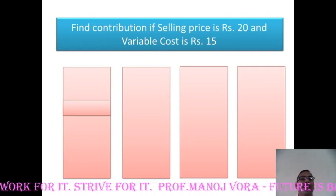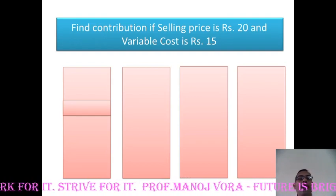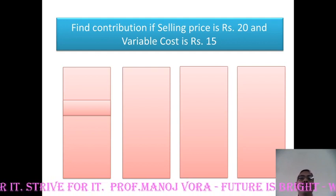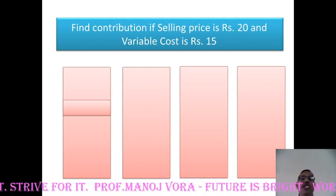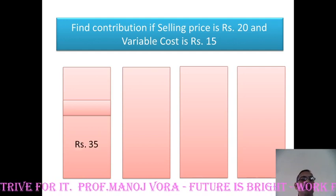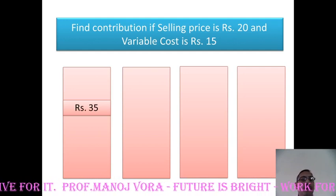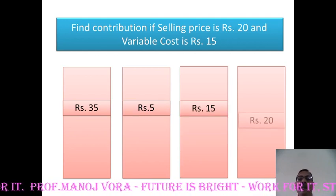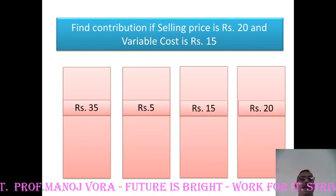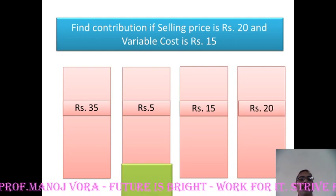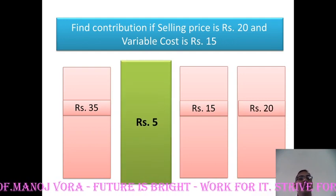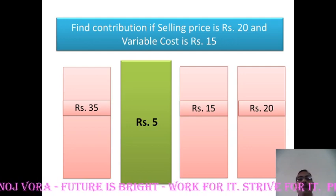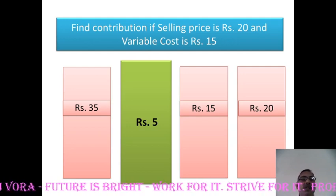Here is your next question: find contribution if the selling price given is rupees 20 per unit and variable cost is rupees 15 per unit. Your options: rupees 35, rupees 5, rupees 15, and rupees 20. Your right answer is rupees 5. Contribution is the difference between selling price and variable cost. Therefore, 20 minus 15 is 5.